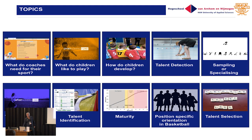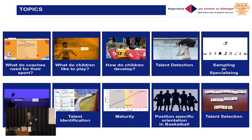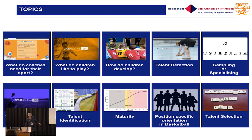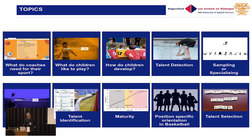First of all, I would like to know what coaches need in their sport — to talk about basketball, of course. Then, what do children like to play? How do children develop? What is talent detection? Do we have to sample or specialize very early? Talent orientation — is that possible? Talent identification in basketball, maturity under 14, position-specific orientation in basketball, and then the talent selection as the last topic.